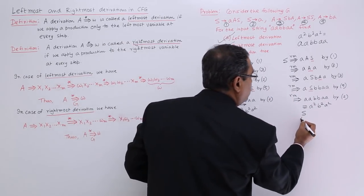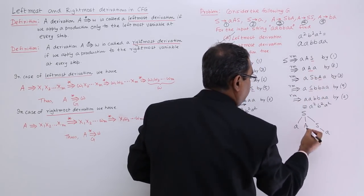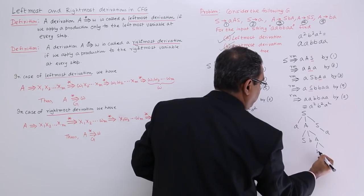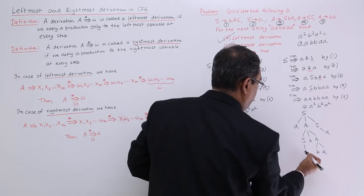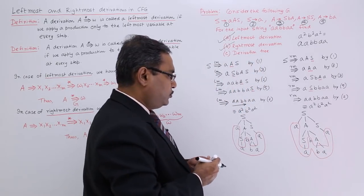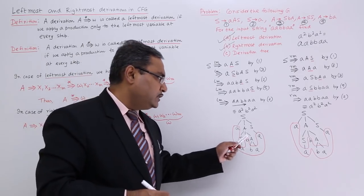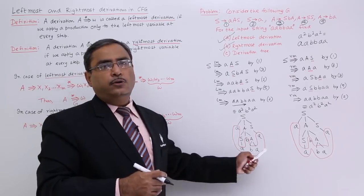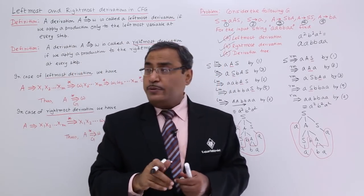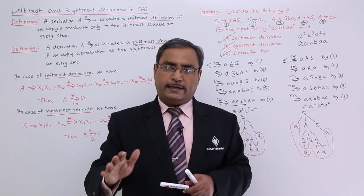In case of rightmost derivation, at first I applied AAS, then S has been replaced by A, and this A became SBA. I selected this particular A, so it came as BA, and this S got replaced by A. Here also, the yield is the same — A A B B A A. So the trees formed in different order look the same after drawing. We have solved all sub-problems. In this way, leftmost and rightmost derivation techniques become clear. Thanks for watching this particular video.